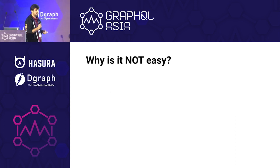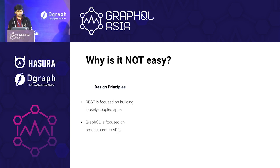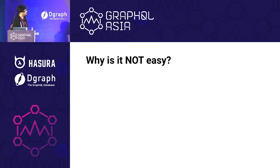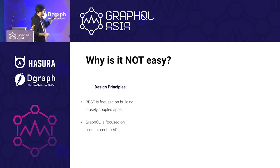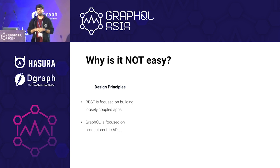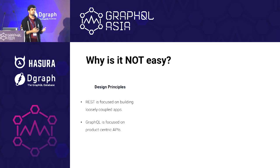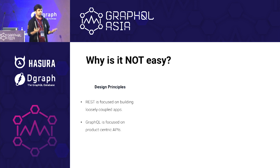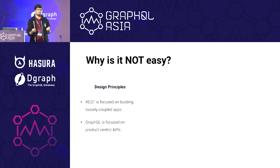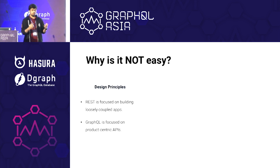Why don't I think it's easy? Primarily because of the first thing: both have different design principles. GraphQL is built towards building APIs and schemas which are product-centric. On the other hand, REST is focused on building decoupled applications. Although these may not seem contradictory at first, they are completely different goals and may end up confusing the developer as to what they are actually building towards.